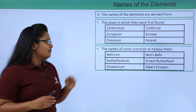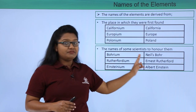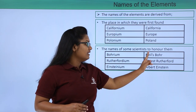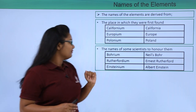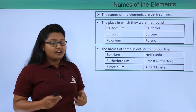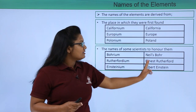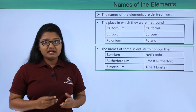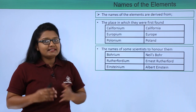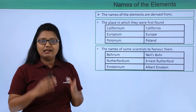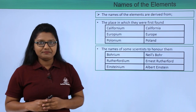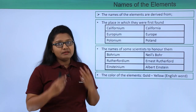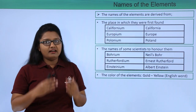Another set of elements are named after famous scientists in order to honor them. For example, bohrium is named after the scientist Niels Bohr, rutherfordium is named after Ernest Rutherford, and einsteinium is named after the famous scientist Albert Einstein.